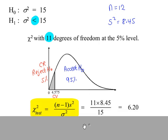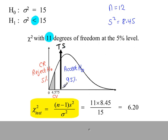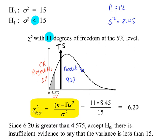Applying the formula: N-1 is 12-1 = 11, S-squared is 8.45, sigma-squared is 15. Our test value is 6.20. Since 6.20 is greater than 4.575, we're in the accept H0 region. Our conclusion is: since 6.20 is greater than 4.575, we accept H0 and conclude that there is insufficient evidence to say that the variance is less than 15.